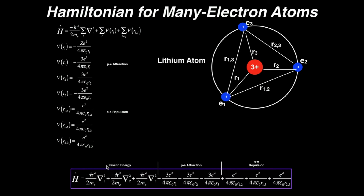All we do is add up the kinetic energy terms, add up the attraction terms, and add up the repulsion terms — that would be the Hamiltonian. The Hamiltonian for the lithium atom would be the sum of the three kinetic energy terms: for each electron, negative h-bar squared over 2 times the mass of the electron, times the Laplacian operator for that particular electron. So that's one term for electron 1, one for electron 2, and one for electron 3. There's always going to be one kinetic energy term per electron.